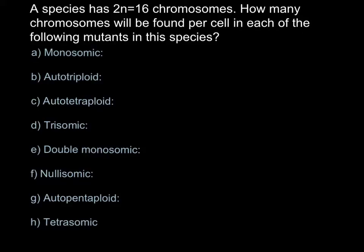Hi! Today's problem that we are going to solve is going to be about chromosome number and ploidy level. Here is the problem: a species has 2n = 16 chromosomes. How many chromosomes will be found per cell in each of the following mutants in this species? Note that 2n means that when two gametes with a haploid number of chromosomes join, they form one cell with double the chromosome number — the normal chromosome number for a somatic cell. In this particular organism, the normal somatic number is 16.